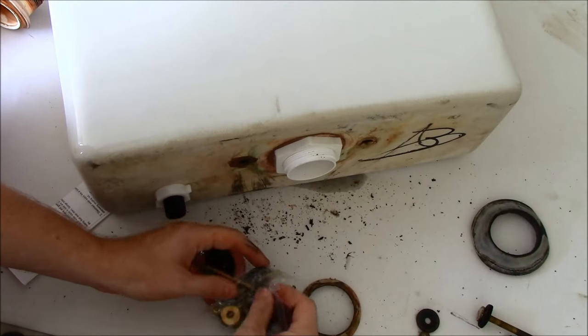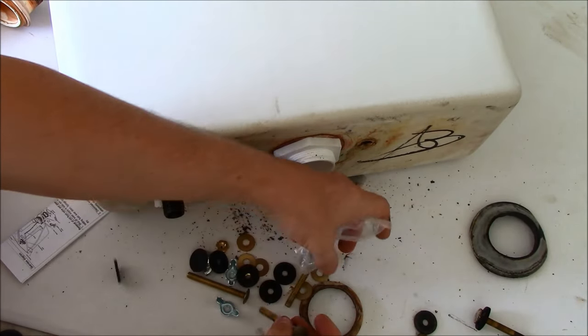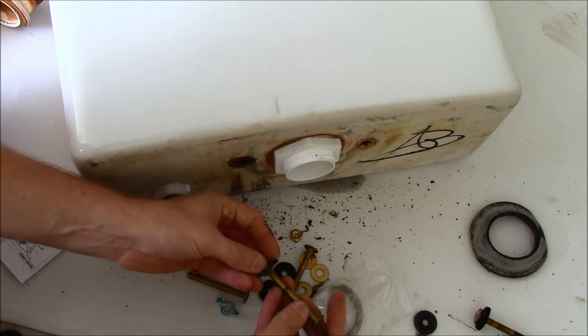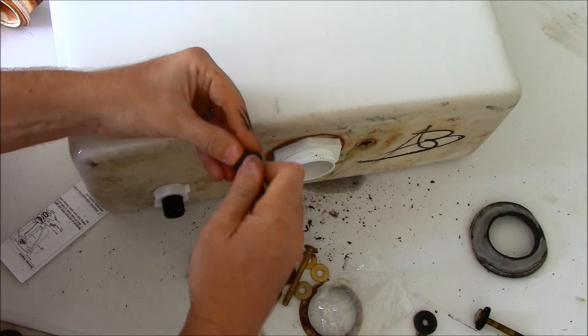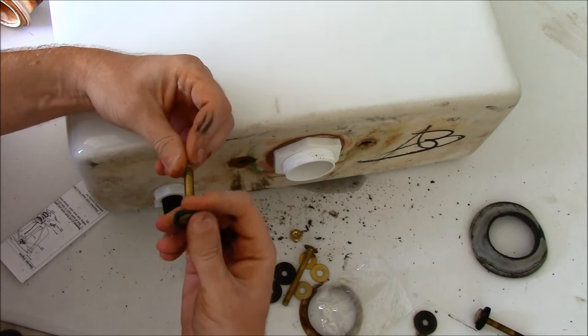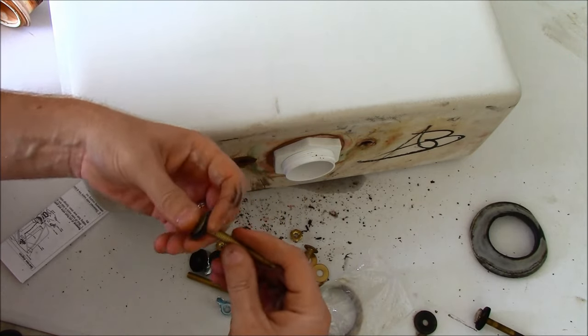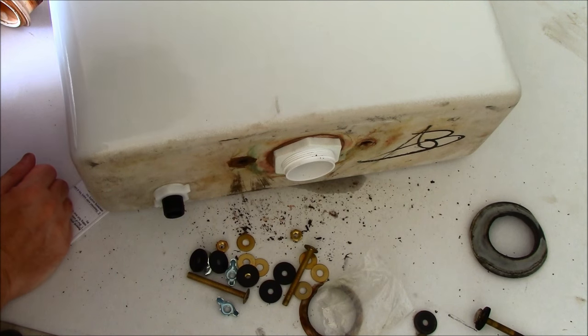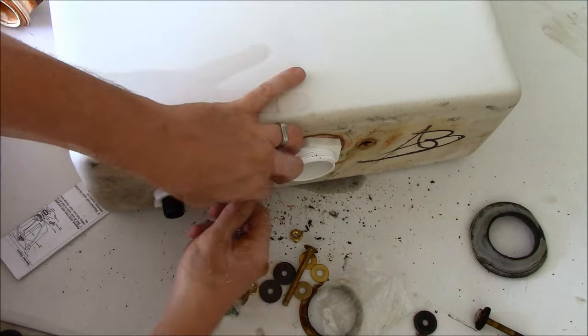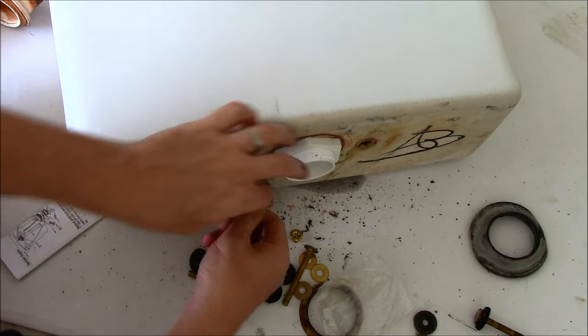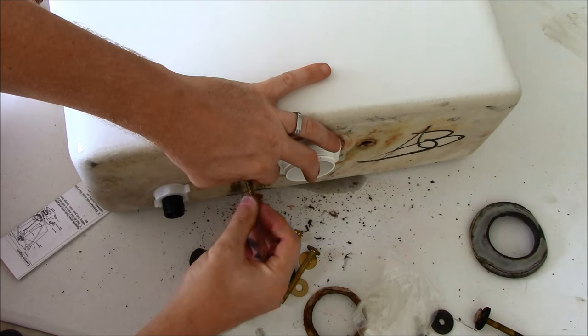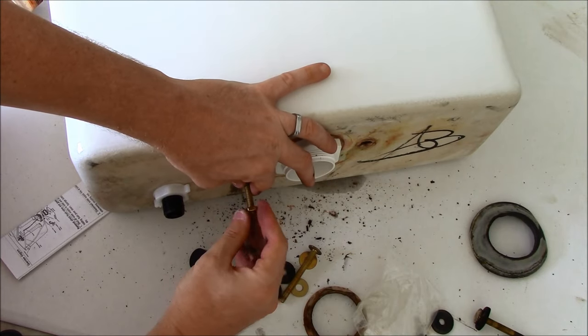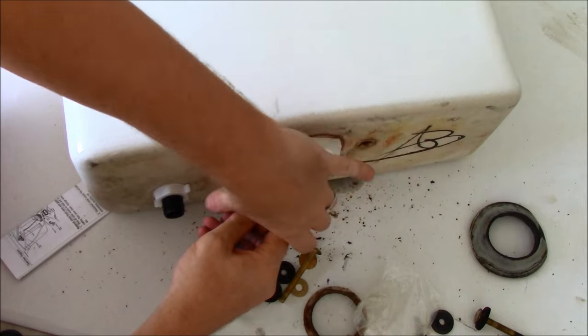Now we can put our bolts back in. And we need a rubber washer on this side, a rubber washer on this side, a metal washer, and the nut.